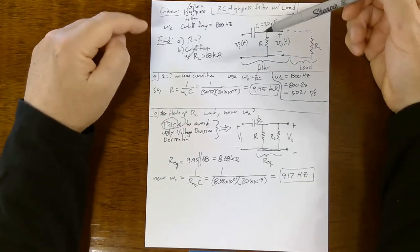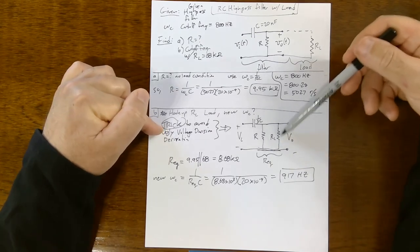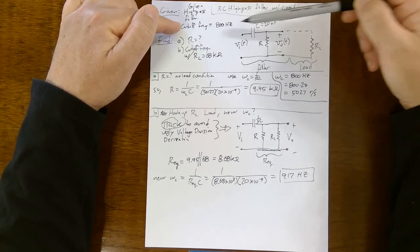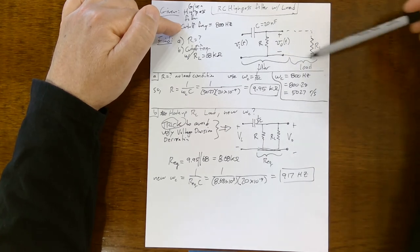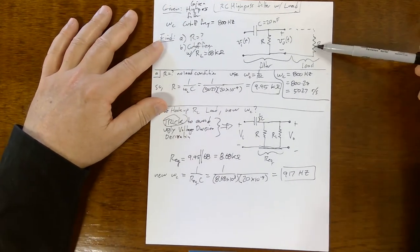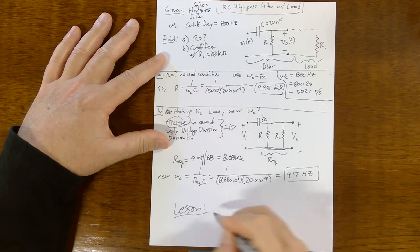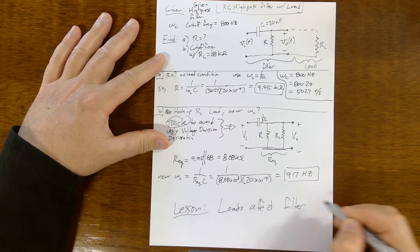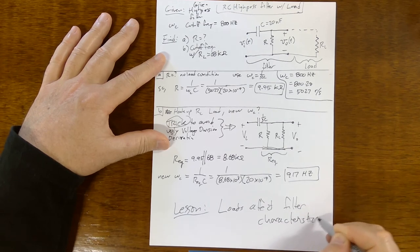We got lucky on this one. I chose it on purpose because this is simple. If this were more than a resistive load, it would be more complicated. But the point is, the original filter was designed to give us an 800 Hertz cutoff frequency, but when you actually use the filter by hooking it up to some other load, that cutoff frequency changes. So you need to consider the load when you're designing a filter. That's the lesson here: loads affect the filter characteristics and you need to account for that. Hope that was useful, see you next time.